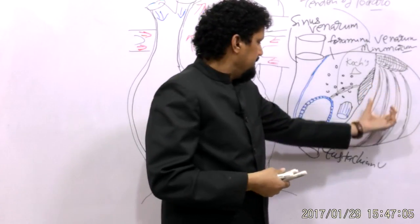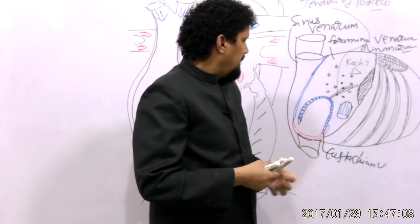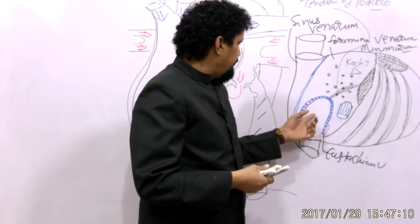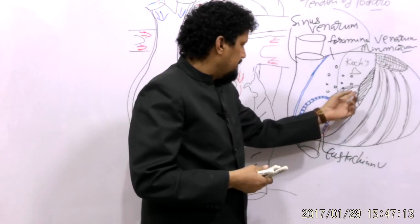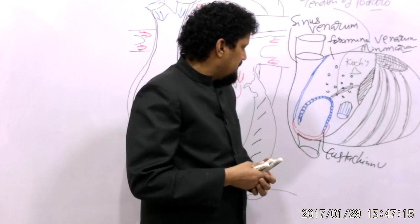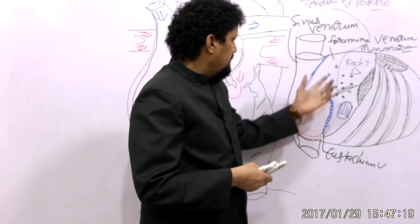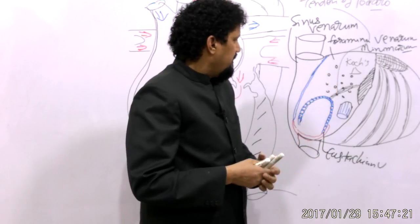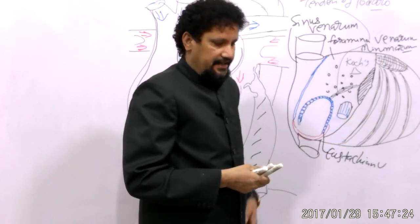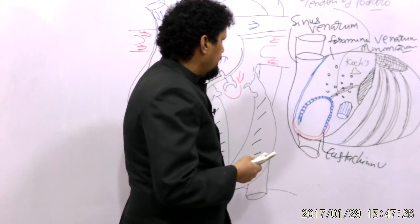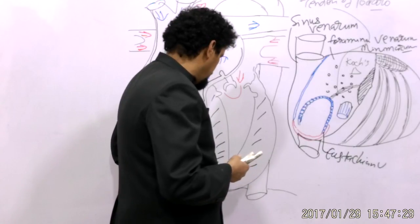So here we can see the rough part, the smooth part, the fossa ovalis, the opening of the coronary sinus, and the septal cusp of the tricuspid valve. Also visible are the openings of the superior vena cava and inferior vena cava. The posterior part forms the interatrial septum, and the anterior part is the rough part or atrium proper. Next, we will discuss the anatomy of the right ventricle.